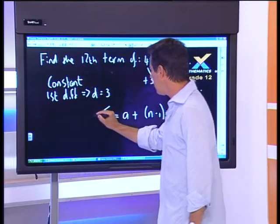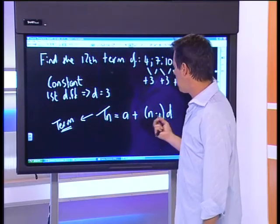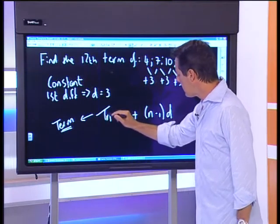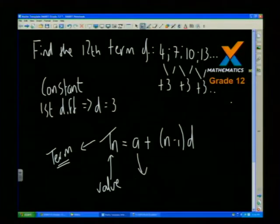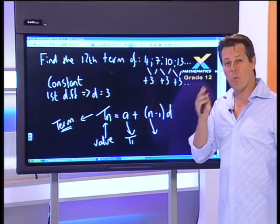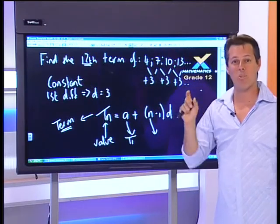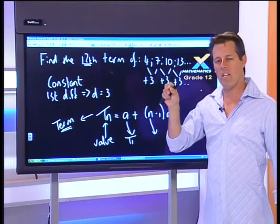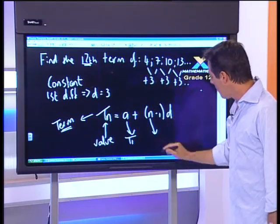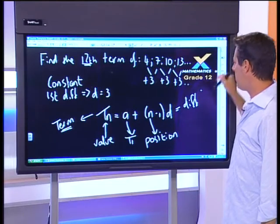The T tells me I'm dealing with a term — I'm talking about a sequence, not a sum or a series. Tn stands for the value. 'a', which we can also write as t1, is the very first term of your sequence. 'n' is your position — where you are in the sequence, for example the fifth, eighth, or twelfth term. Tn tells me the value at a position, so we must never confuse the two. And d is the difference between any two successive terms — we call it the first difference.